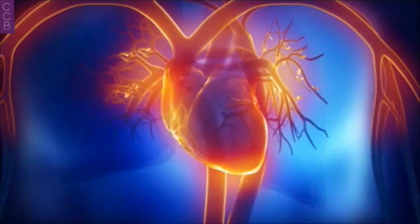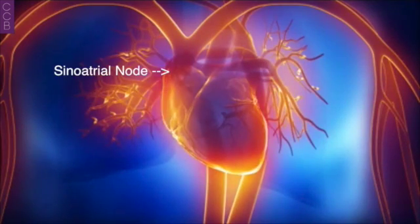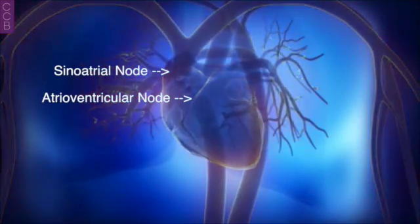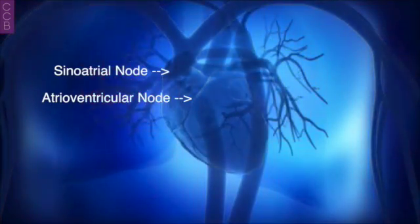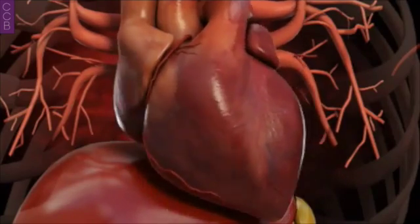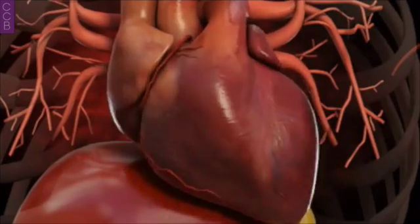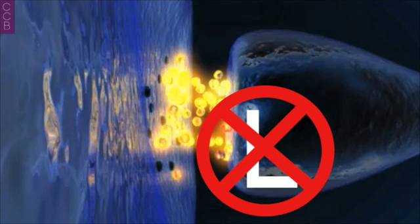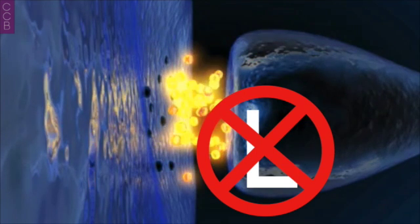Examples of nodal tissue include the sinoatrial and atrioventricular nodes. When this type of channel is stimulated, it promotes smooth muscle contraction and cardiac muscle contraction, and is also involved in the conduction of pacemaker signals. Calcium channel blockers, as the name suggests, prevent or reduce the opening of these channels.